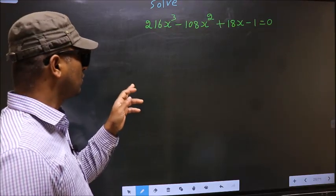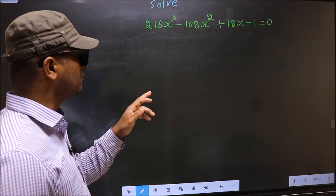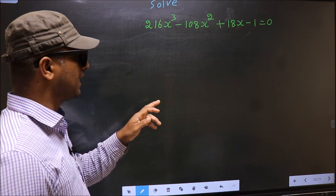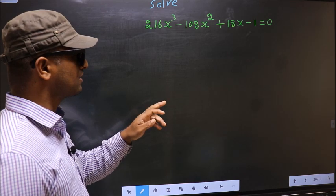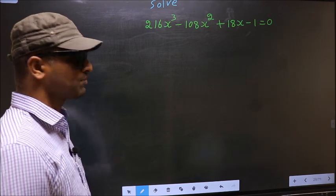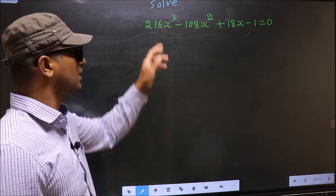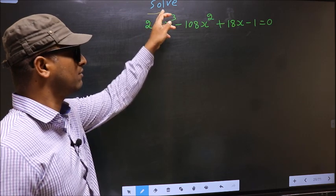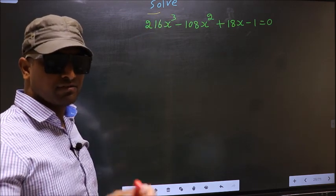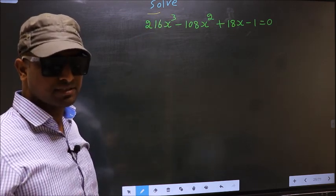Solve 216x³ minus 108x² plus 18x minus 1 equal to 0. They told us to solve, which means we should get the values of x.